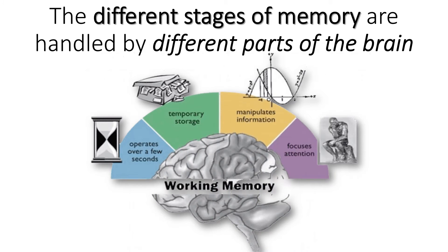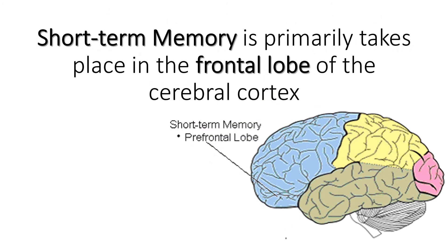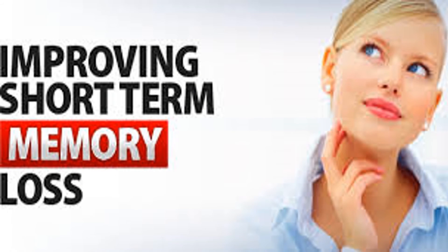The different stages of memory are handled by different parts of the brain. Short-term memory primarily takes place in the frontal lobe of the cerebral cortex. The information then makes a stopover in the hippocampus and is transferred to the areas of the cerebral cortex involved in language and perception for permanent storage.